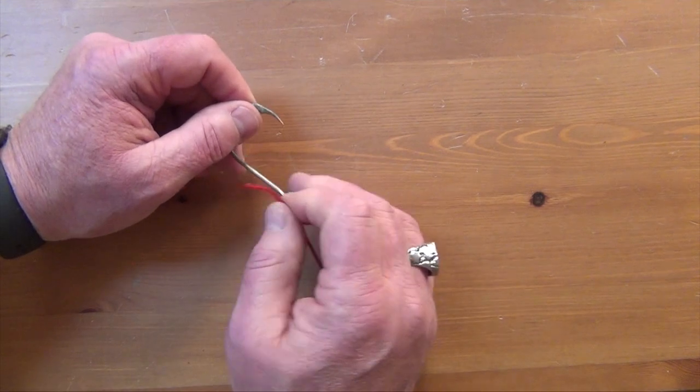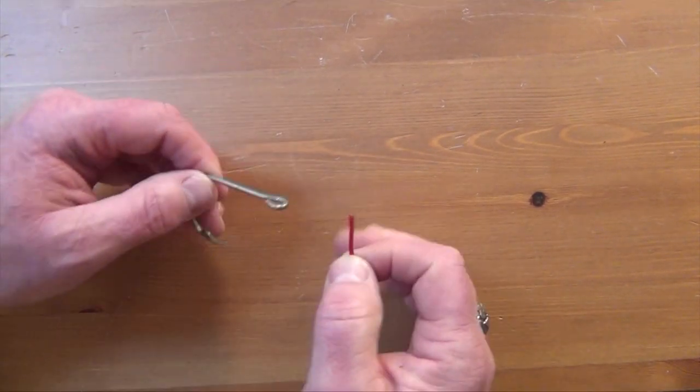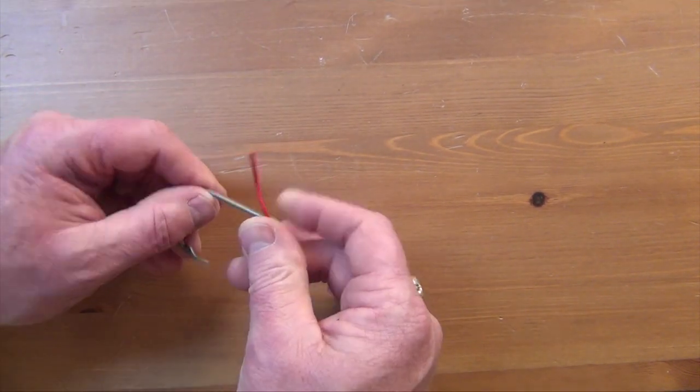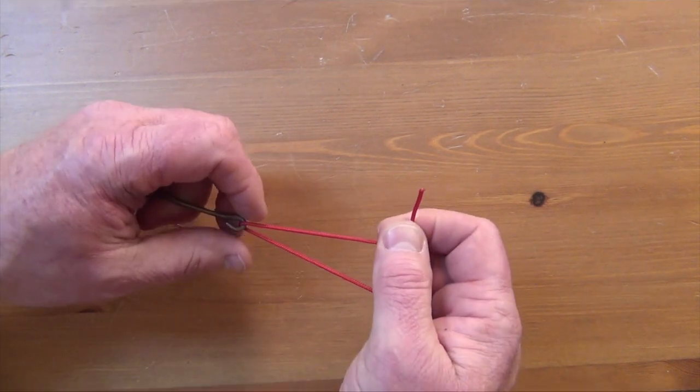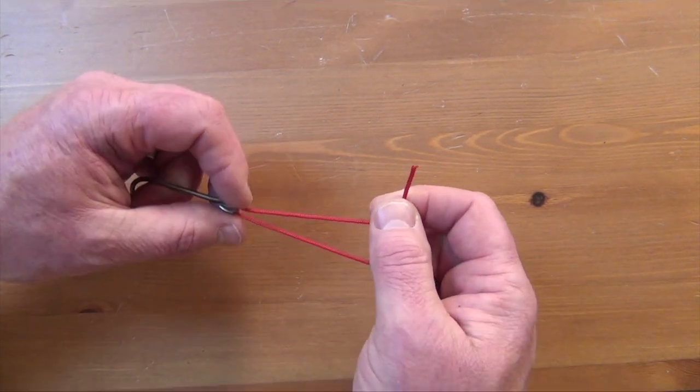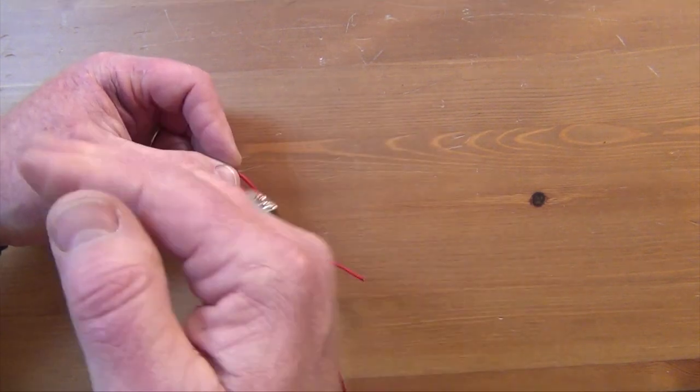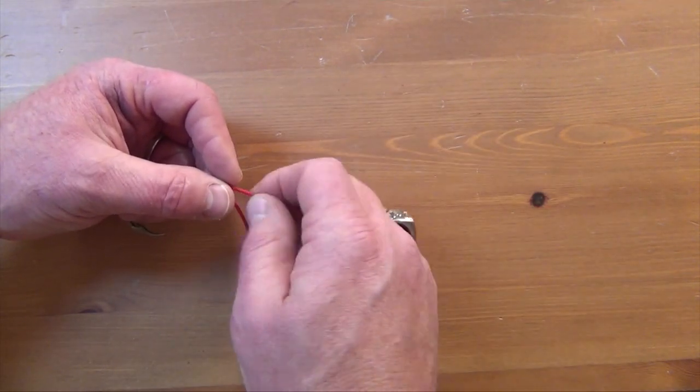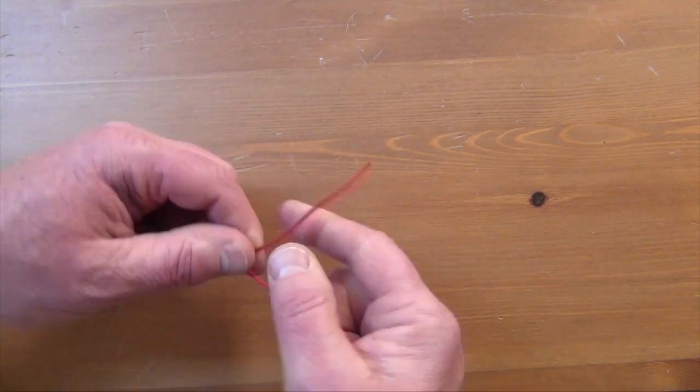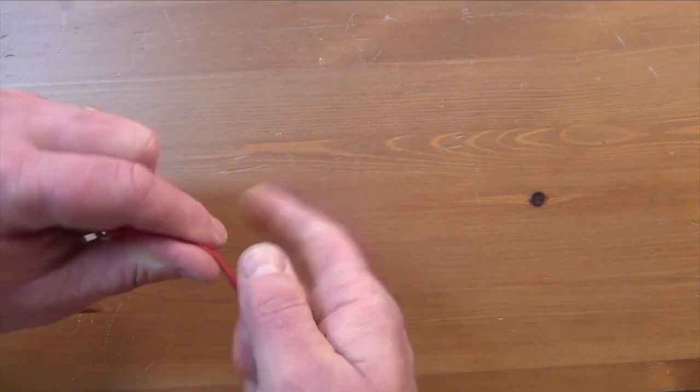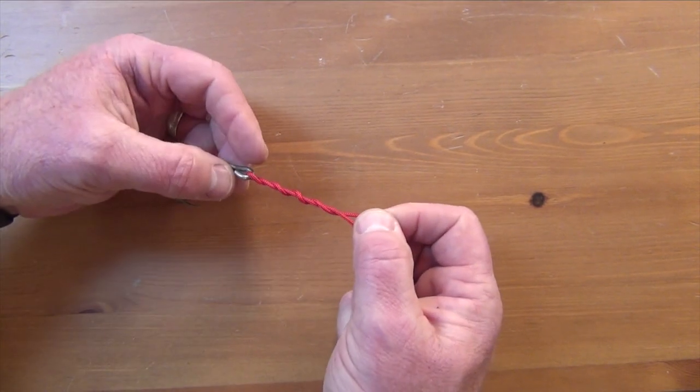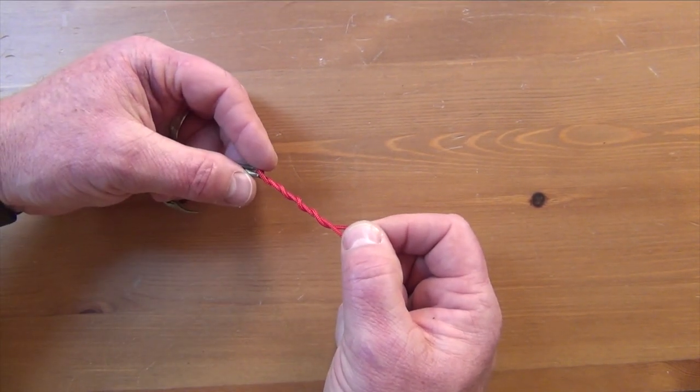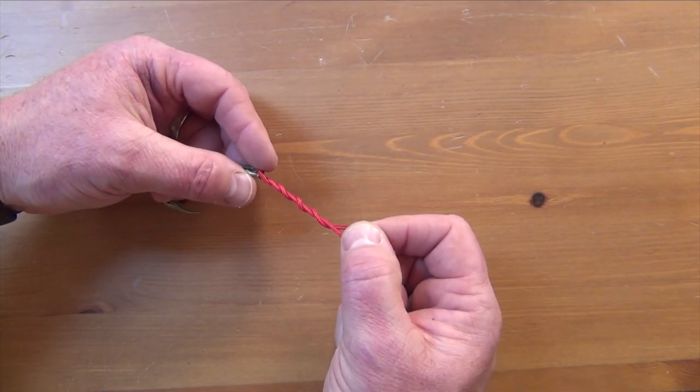So I use just a simple clinch knot. Simple, okay? So I'm going to come through the eye of whatever it is. I tie my terminal tackle with this, I tie my hooks with this. Or if I'm tying my leaders onto my terminal tackle, we use an egg loop knot for our hooks. But we come through here, we get our wraps.